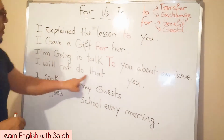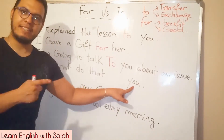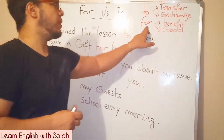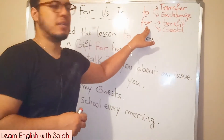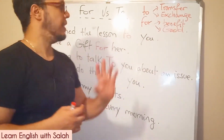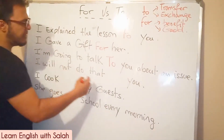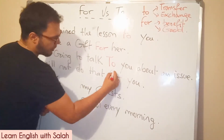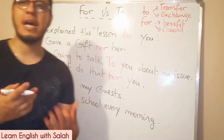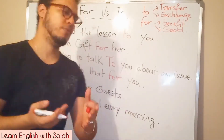'I will not do that' — is it 'to you' or 'for you'? We can say 'for' because it's something beneficial, something good. So: I will not do that for you. You'll benefit from what I'm going to do for you.